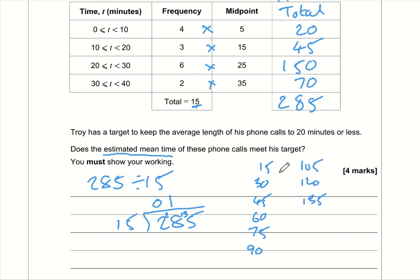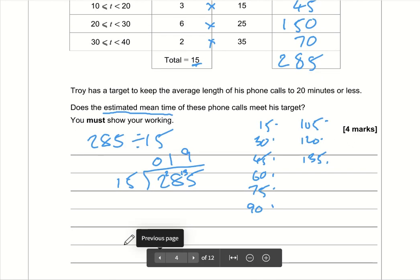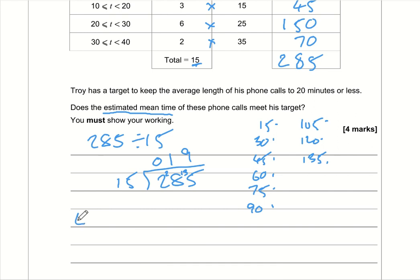Now we're dividing 135 by 15, so let me write out the 15 times table: 15, 30, 45, 60, 75, 90, 105, 120, 135. Perfect! 135 is 9 times 15. So the estimated mean time is 19 minutes. This is the key bit of maths you need to show.